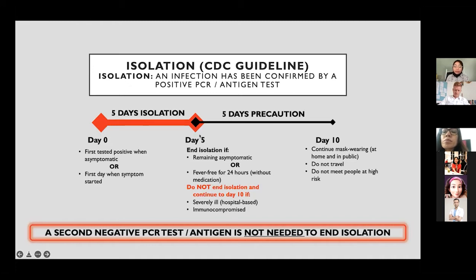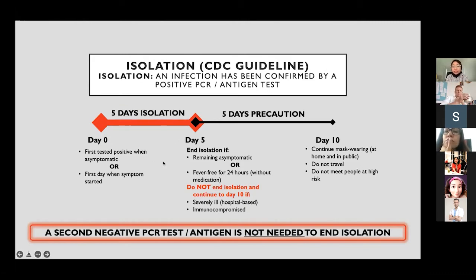On day five, a person can end their isolation if they have remained asymptomatic from day zero to day five — no test needed to confirm this. If they developed symptoms during the five days, they need to have a normal temperature for 24 hours without medication by day five. That's why it's important to monitor children's temperature at least twice a day to see if fever is resolving without any medication like paracetamol.